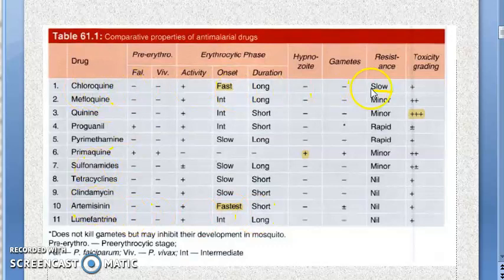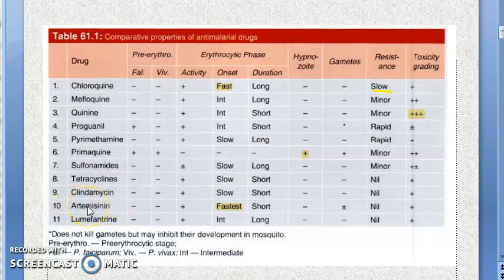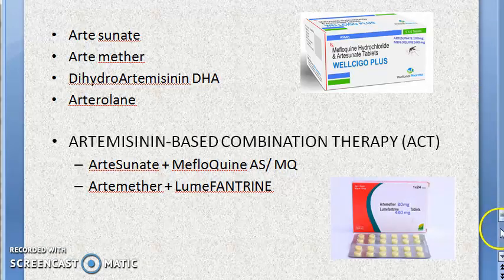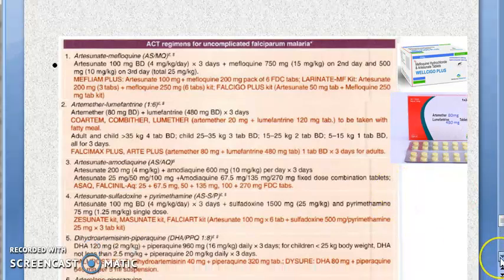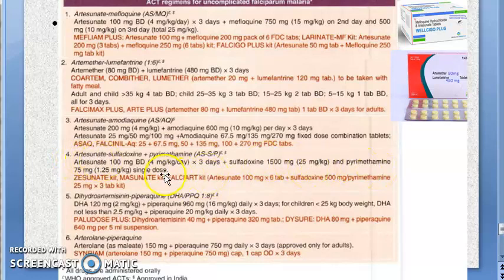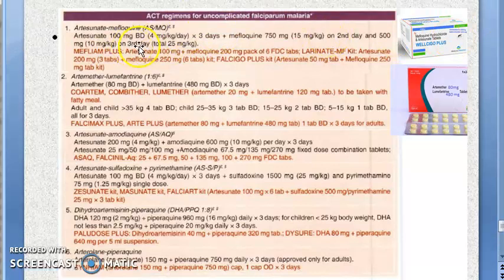The key difference between chloroquine and artemisinin: chloroquine has a long duration of action; artemisinin is short-acting. Chloroquine is usually used only for vivax malaria, while artemisinin is used for falciparum malaria in ACT regimens, combining with drugs like mefloquine, lumefantrine, sulfadoxine-pyrimethamine, or piperaquine.